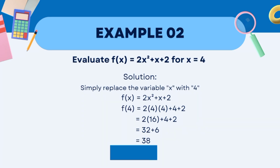Let's move on to the second example. We have f(x) = 2x² + x + 2. First, substitute the given value, 4, into the given variable. So, f(4) = 2 times 4 squared plus 4 plus 2.